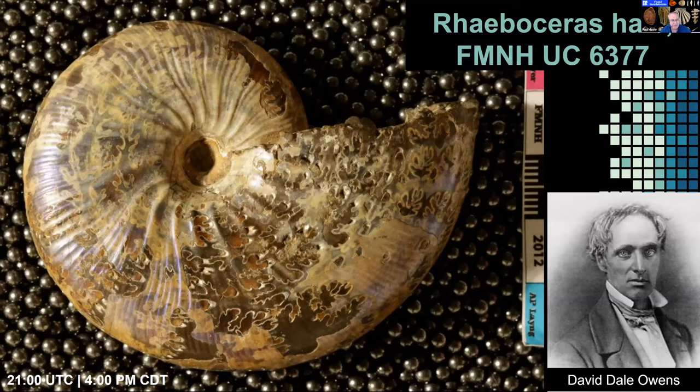I'll take a sidebar now to talk about David Dale Owen, who was a fascinating person. He served as Indiana's, Kentucky's, and Arkansas's first state geologist. His works include 11 volumes of published reports from state and federal geological surveys. He is also responsible for the Smithsonian Castle having its dark red color, because Owen recommended the dark red Seneca Creek sandstone for the building and selected the quarry himself.